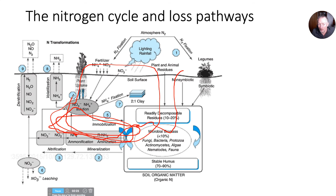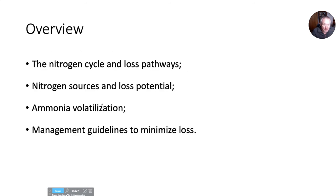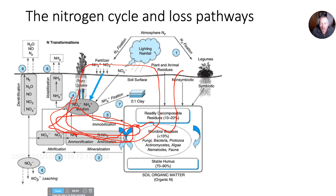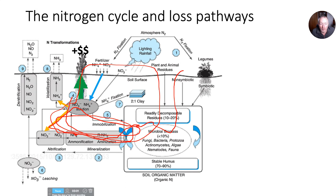What we're going to talk about mainly today is fertilizer input — shortcutting that cycle and putting fertilizer directly into the available nitrogen pool. From there it can either be taken up by crops, which means we're in the black and make money, or it can be lost. Ammonium can be volatilized to ammonia gas and lost to the atmosphere. Nitrate can be lost via leaching or denitrification. In Wyoming with our conditions, ammonia volatilization is probably the more important loss pathway, so I'm going to focus on that.